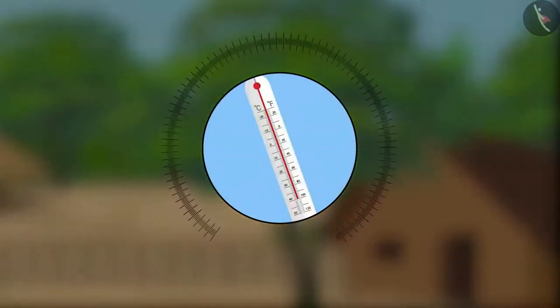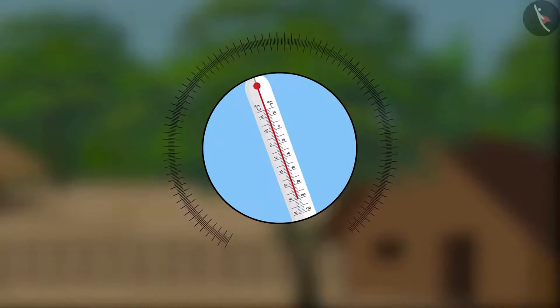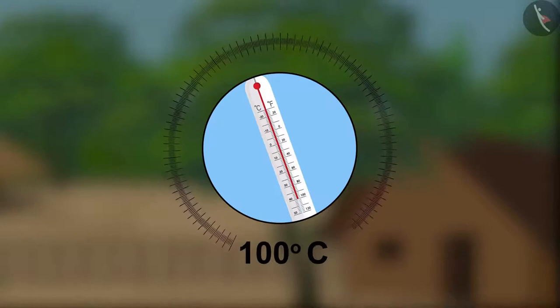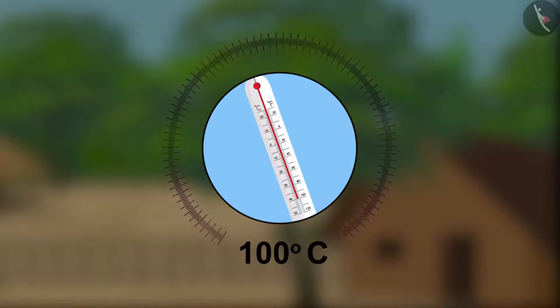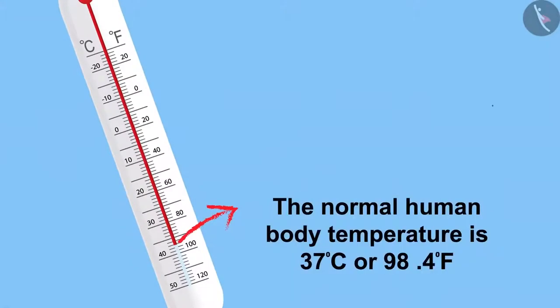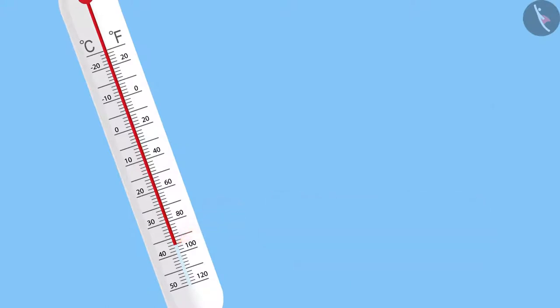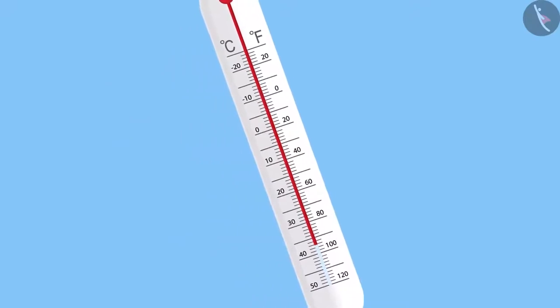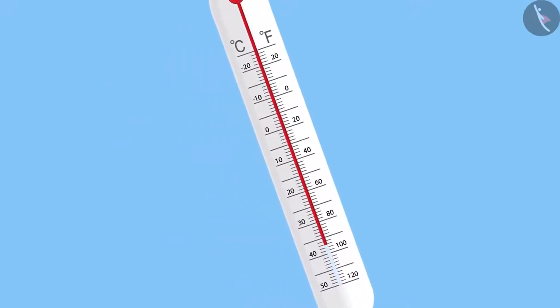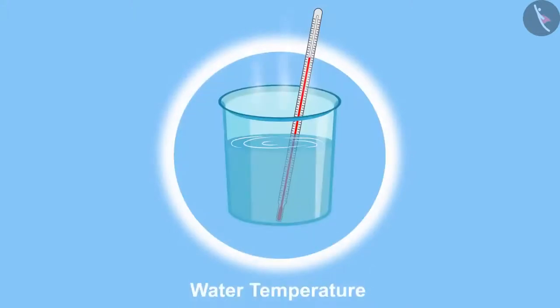I have had fever for the last few days. I checked my fever on a clinical thermometer and the reading was 100 degrees Celsius, which is approximately 2 degrees higher than the normal reading. Do you remember the normal human body temperature? The normal human body temperature is 37 degrees Celsius or 98.4 degrees Fahrenheit. I am sure all of you now know about the use of the thermometer, but can we measure the temperature of hot water with a clinical thermometer?